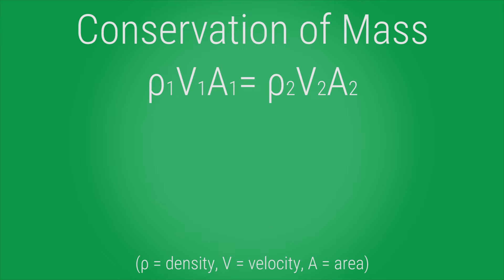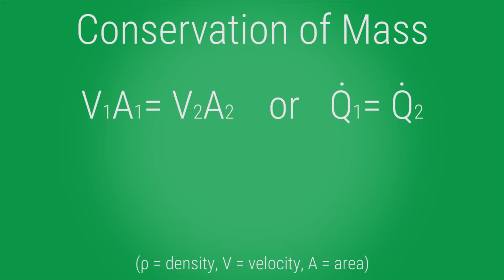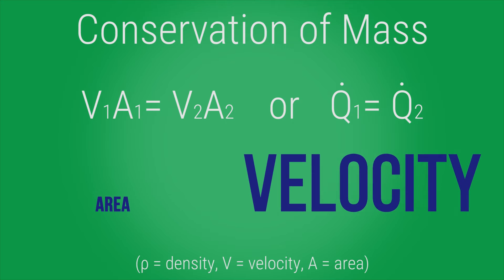Another important concept is the conservation of mass, which states that the mass flow rate at the inlet must equal the mass flow rate at the outlet. Since air is relatively incompressible at the pressures and temperatures in the lab, this equation reduces to: velocity 1 times area 1 equals velocity 2 times area 2, or volume flow rate 1 equals volume flow rate 2. Therefore, if the area decreases, the velocity must increase.